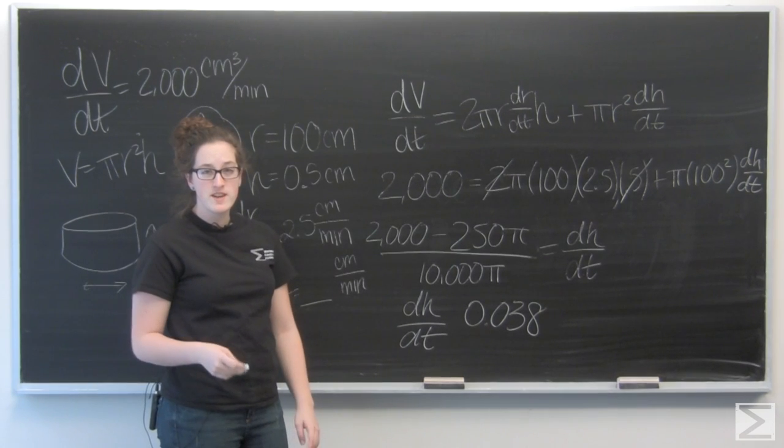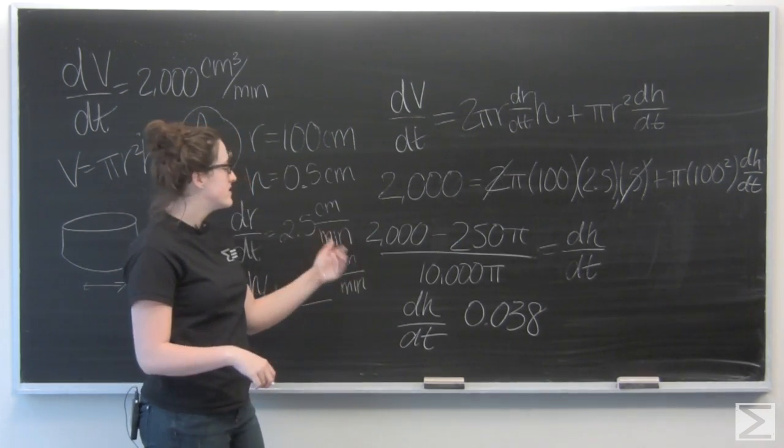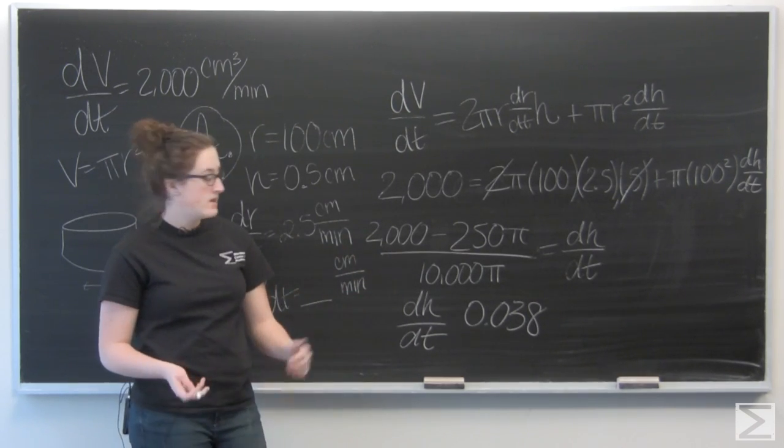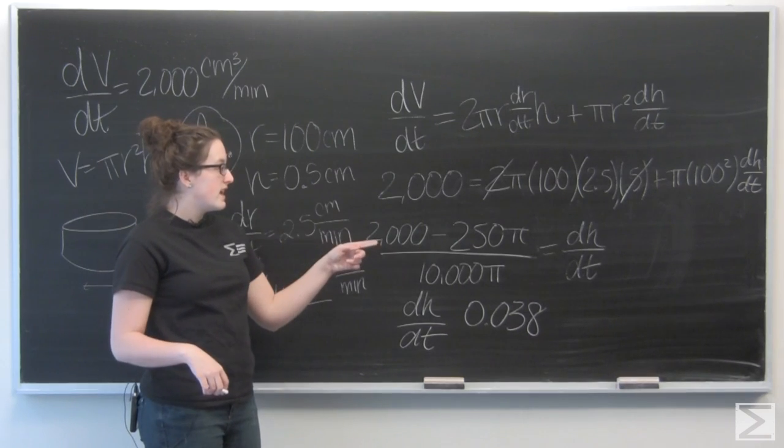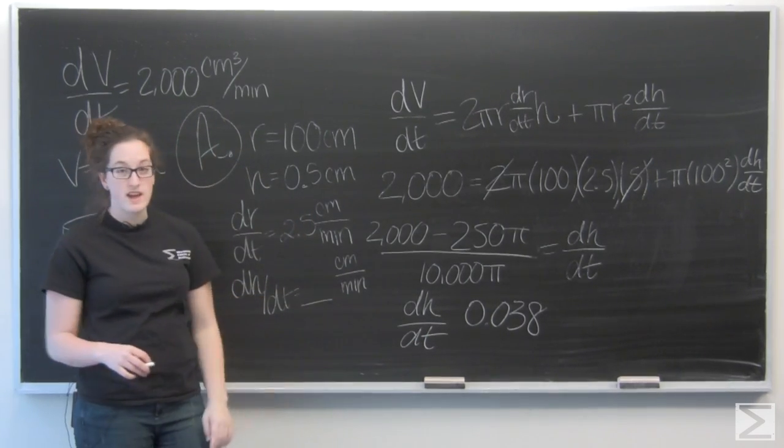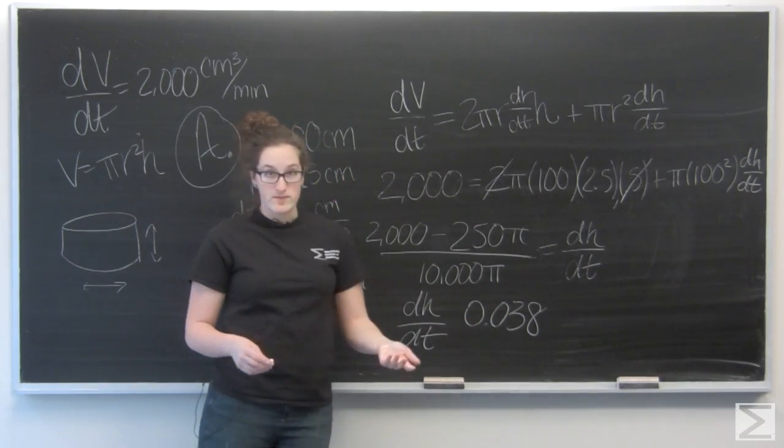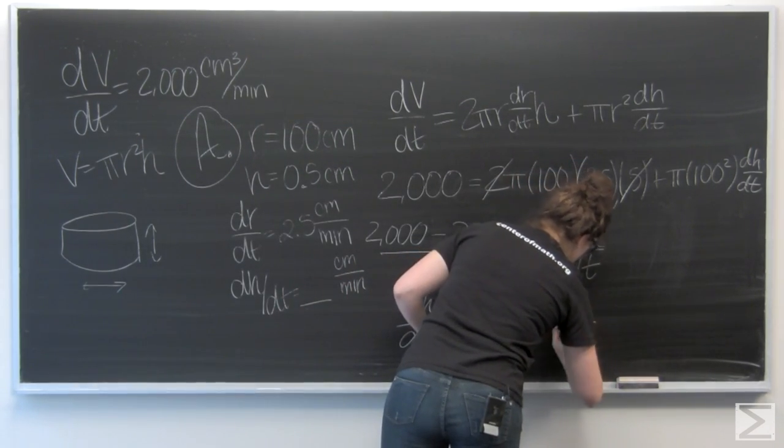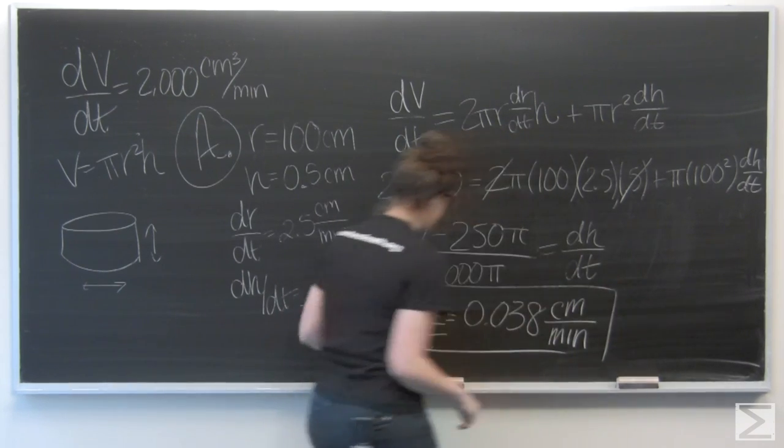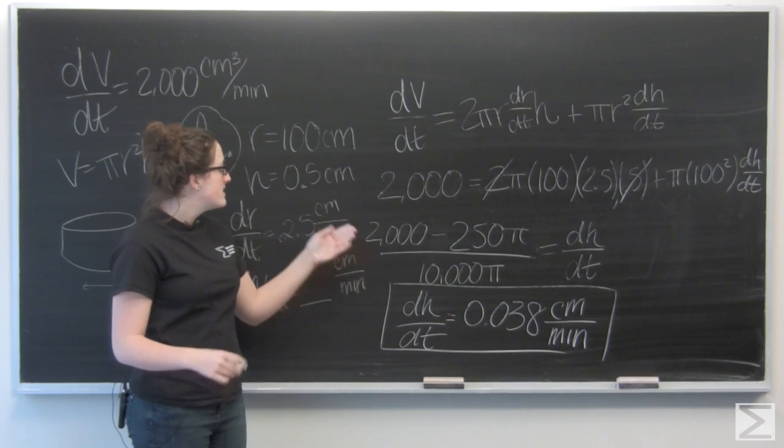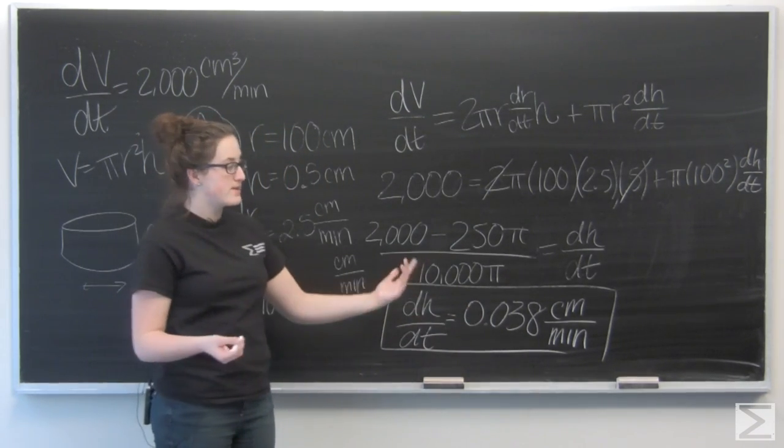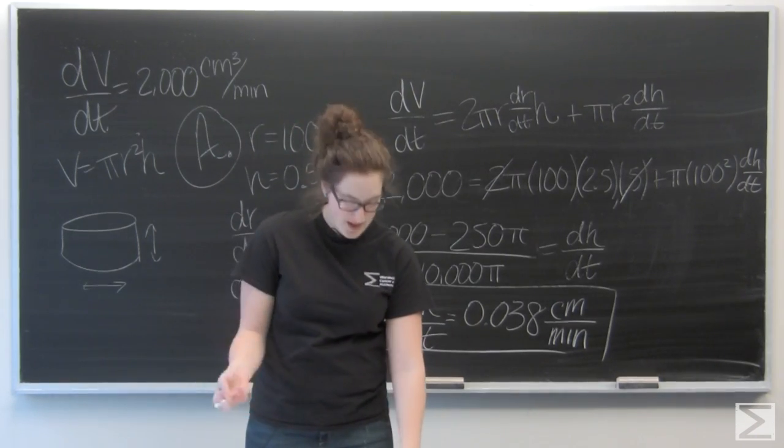Remember when you're using the calculator on the AP exam that AP graders like you to give three decimal points and then you can either truncate that decimal or round. This estimate is truncated. If you were to round, you would get 0.039. Now we need some units. We know that H is measured in centimeters, and dR and dV have minutes. So I'm going to say that this is 0.038 centimeters per minute. At this point, the height of the cylinder is changing at a rate of 0.038 centimeters per minute. So that answers our question for part a.